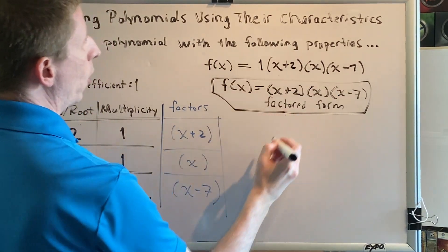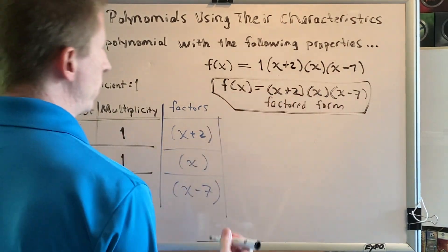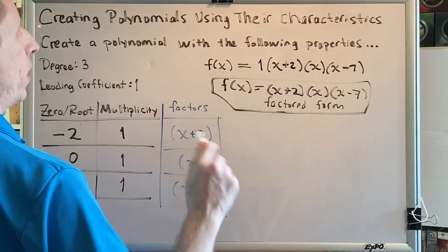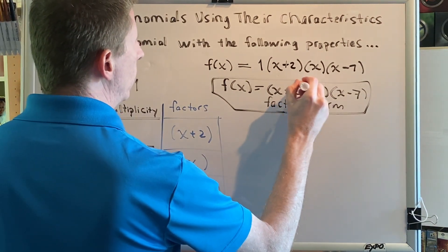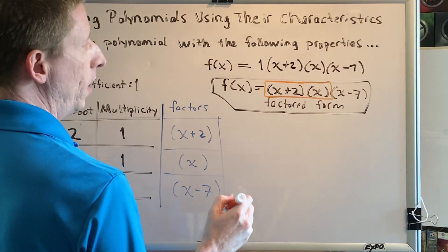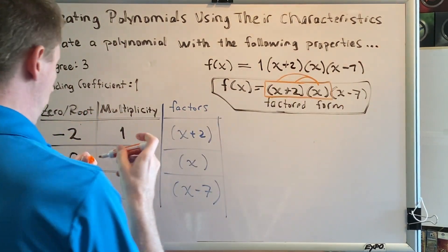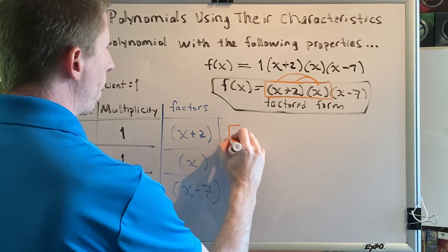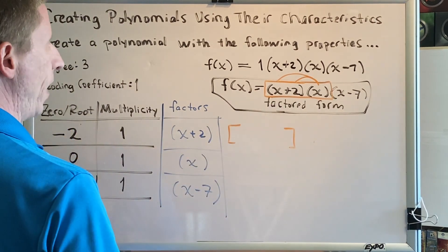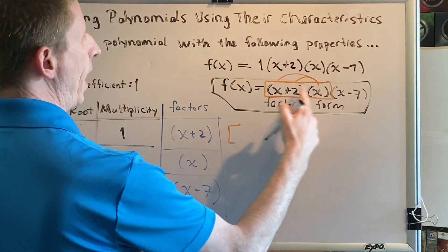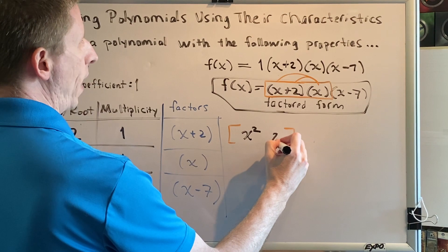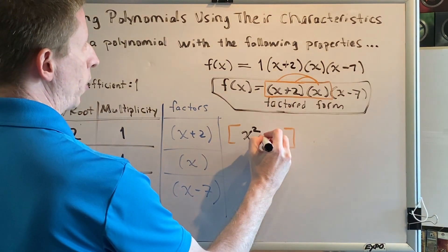This problem also requires us to multiply all of these out to get our answer in standard form. Order of operations says to work from left to right, so we first focus on multiplying x plus 2 by x using the distributive property. Distributing x to x plus 2: x times x is x squared, and x times 2 is 2x, giving us x squared plus 2x.